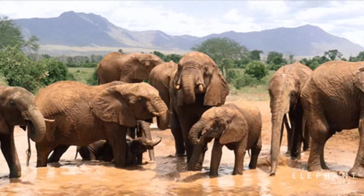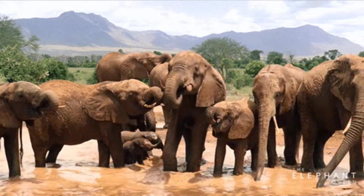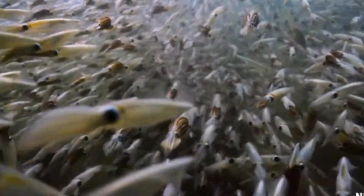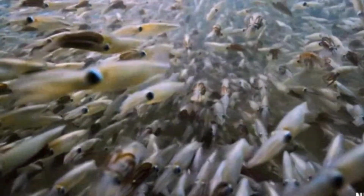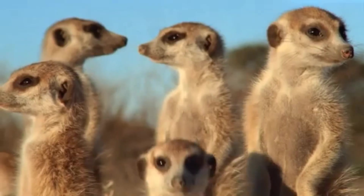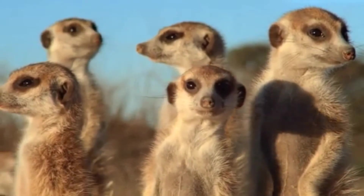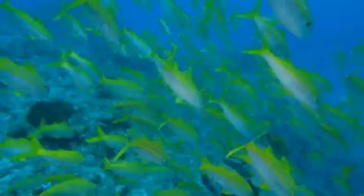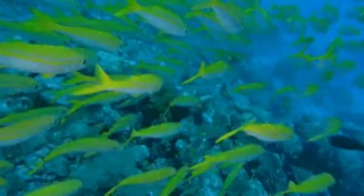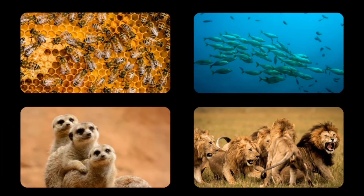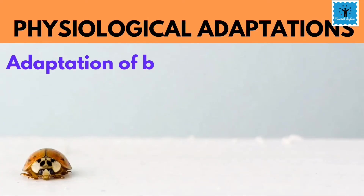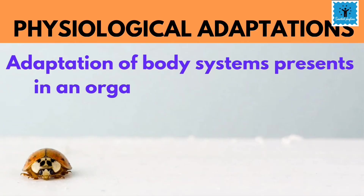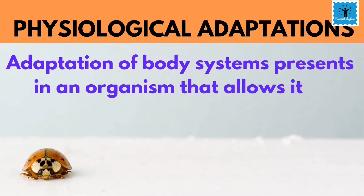Some animals can be found living in groups, which can be small or large depending on the species. Animals form groups mainly to defend themselves or to gather food more effectively. Finding mates also becomes easier. For example, honey bees, fish, meerkats, and lions all live in herds or groups.